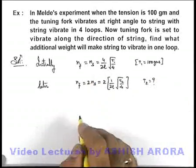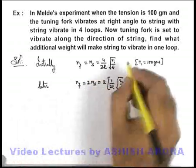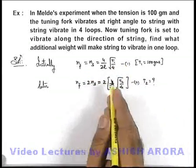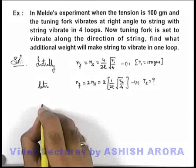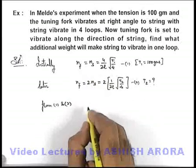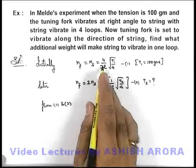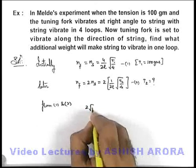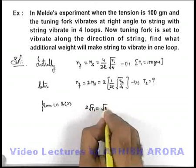So now in this situation, if we divide these equations—say if this is our equation 1, this is equation 2—we can easily calculate from 1 and 2. If we just substitute the values, we'll be getting 2√T1 is equal to √T2.